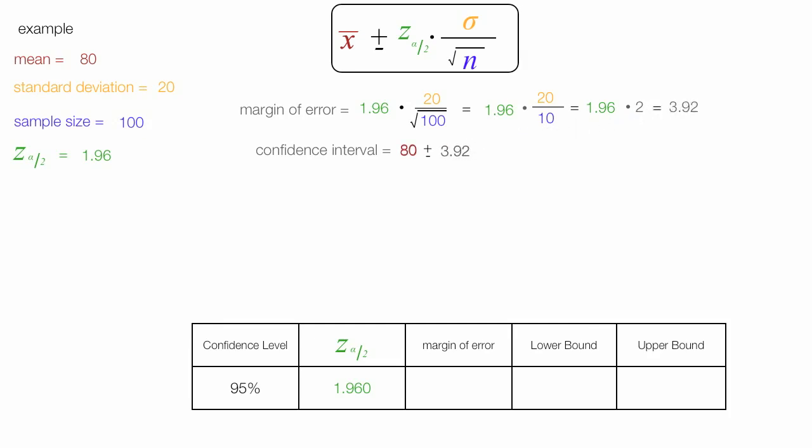So now I'm going to calculate the lower bound, which is 80 minus 3.92, which is equal to 76.08.